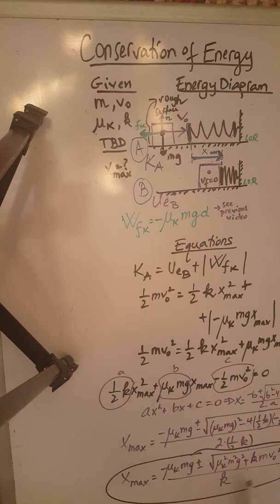And again, we have two possibilities here, because we have the quadratic equation that gave us two possible solutions: negative mu K M G plus or minus square root of mu K squared M squared G squared plus K M V naught squared all over K.